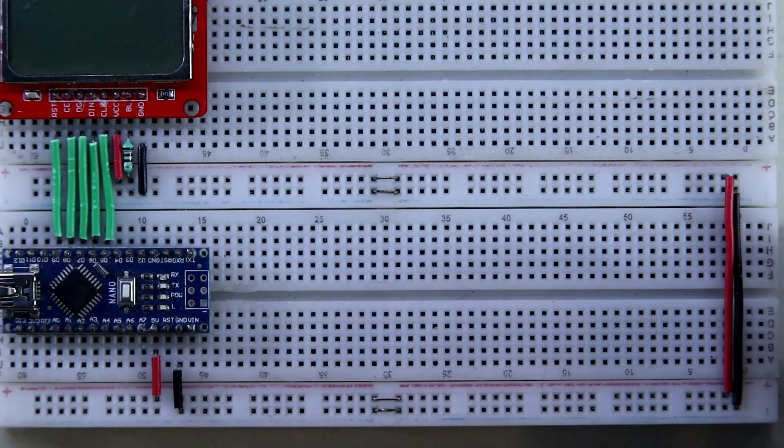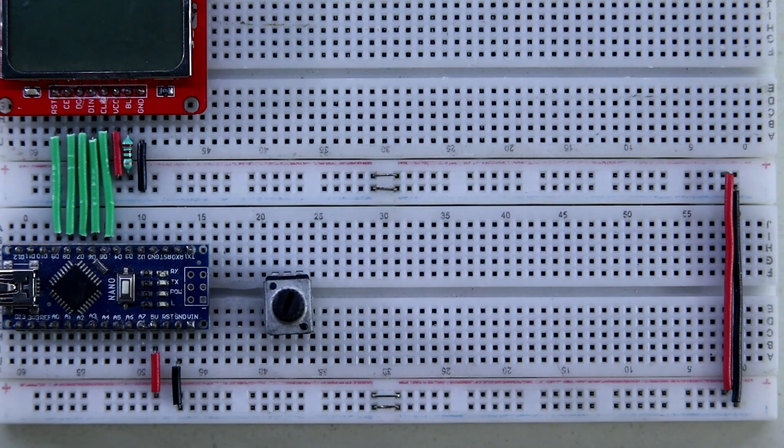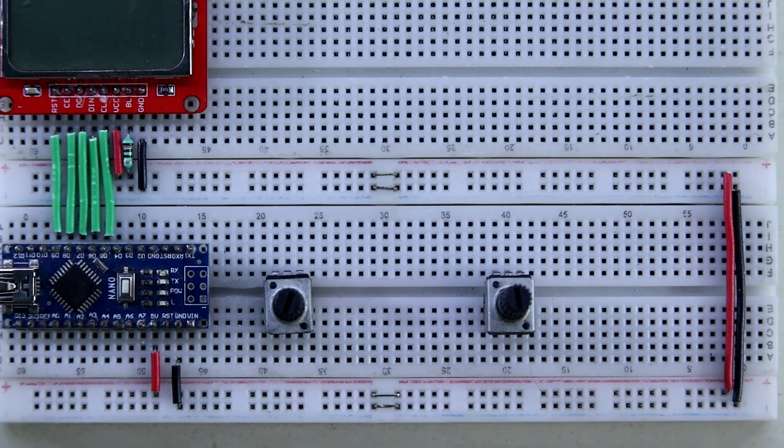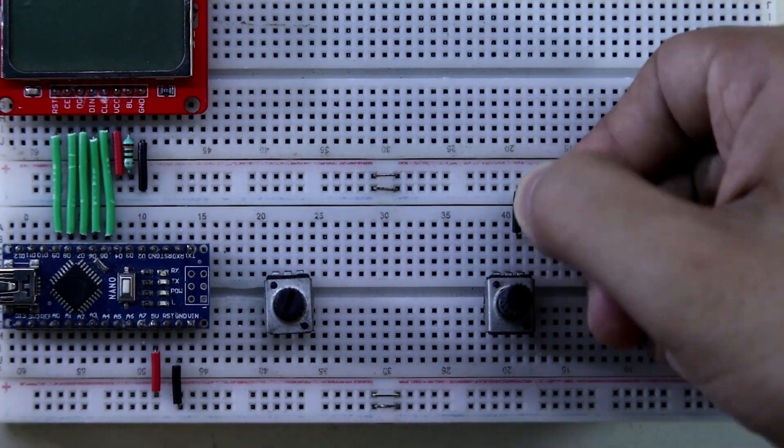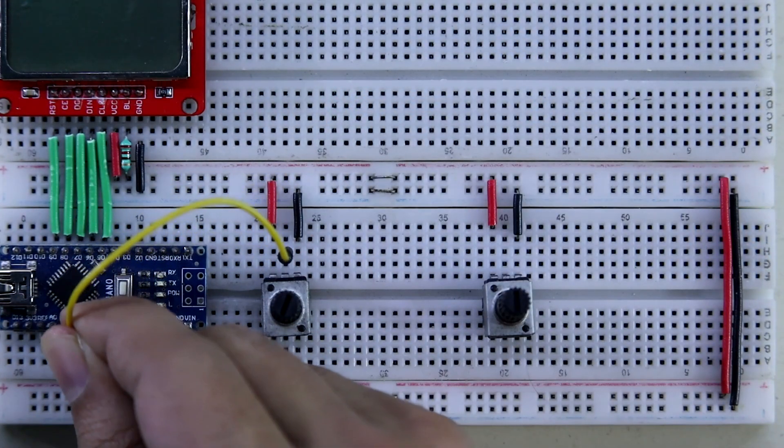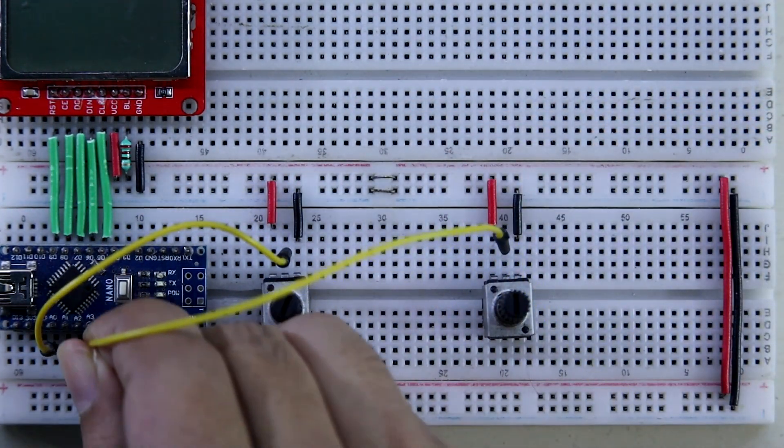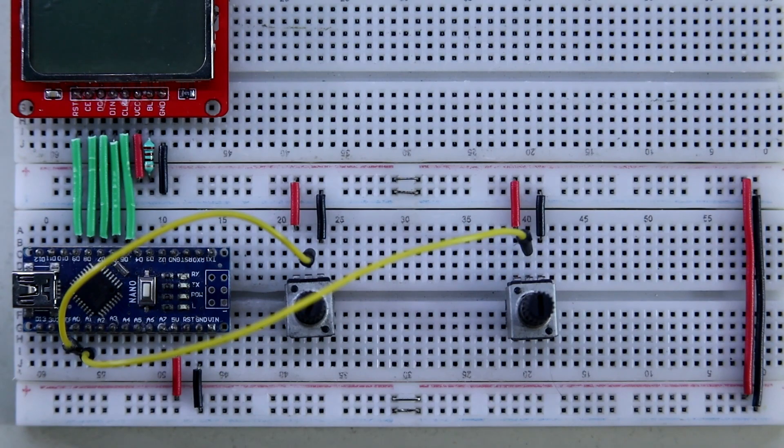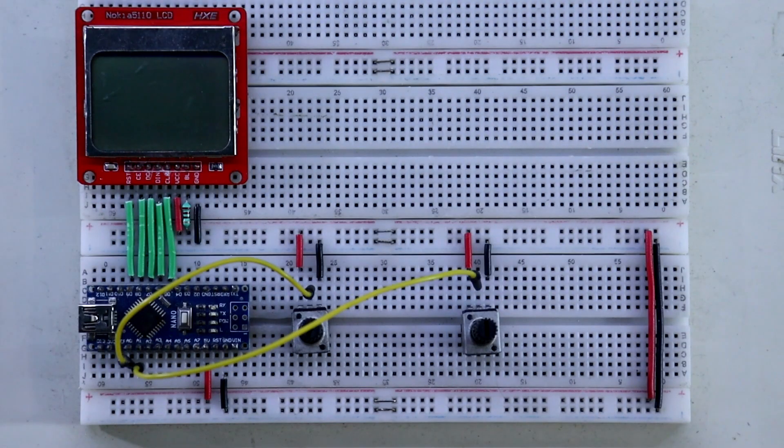Here both the positive and negative rails are connected. Here is potentiometer 1, potentiometer 2. One pin is connected to the ground and the other one to the positive rail. Middle pin of the potentiometer is connected to A0 and A1. So this is the connection and I already uploaded the program. Link is given in the description.